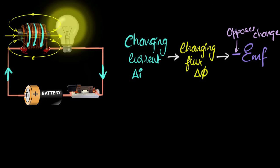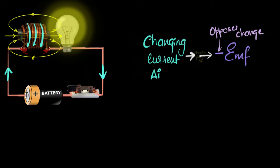If we get rid of this middle man, this basically means that whenever the current changes through a coil, the coil will produce an EMF trying to oppose the change. Which means if you try to increase the current through the coil, it will induce an EMF and tries to decrease it. If you try to decrease the current, it will induce an EMF and will try to increase it.